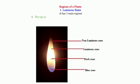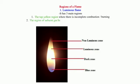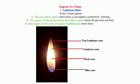1. The top yellow region where there is incomplete combustion or burning. 2. The region of unburnt gas below the yellow region where the gas does not burn. 3. The blue region on the sides of the region of unburnt gas where there is complete burning.